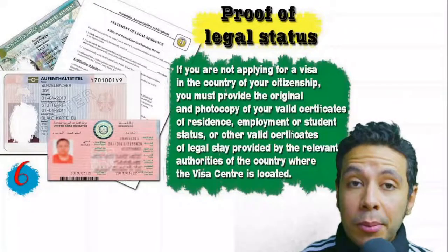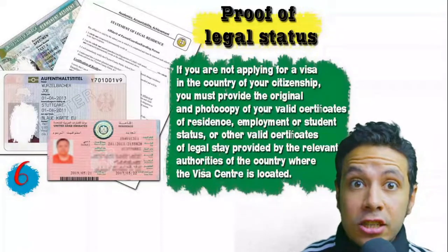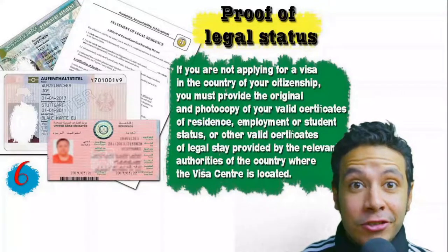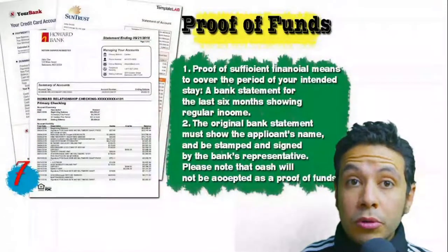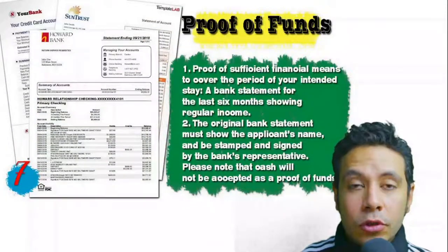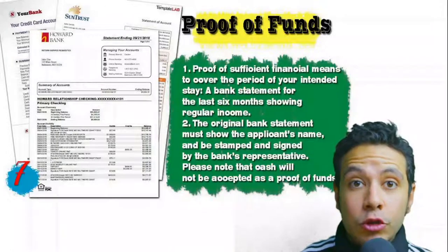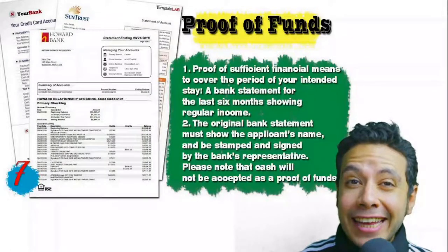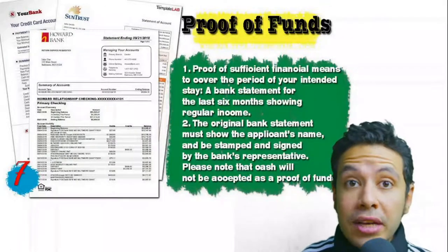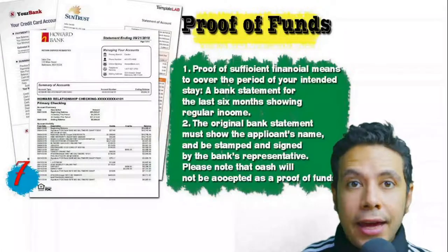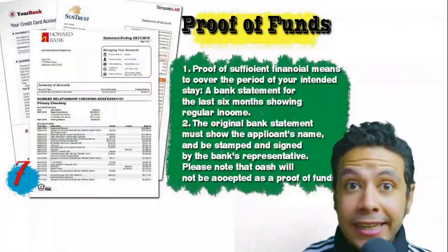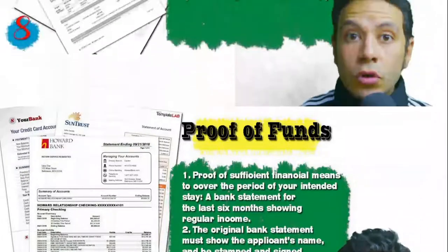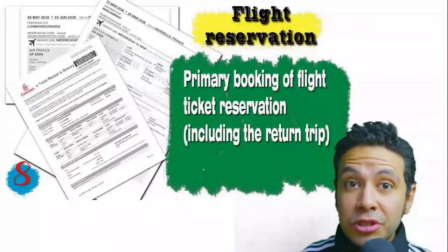In some cases you might be applying from a country different from your own — at that moment you will need to provide proof of legal status, which is a certificate of legal residence in that country. In some cases a valid residence visa can also be accepted. You will also need to provide proof of sufficient funds, which is a bank statement showing your balance for at least six months. The original bank statement must show your name and be signed and stamped by bank representatives. Cash will not be accepted as proof of funds.